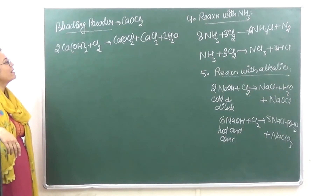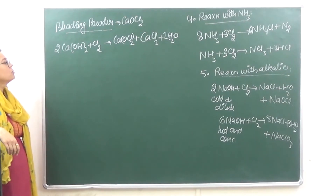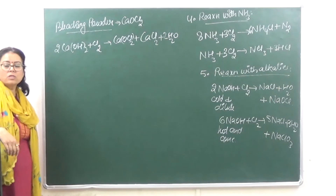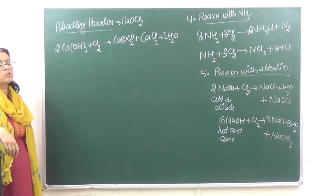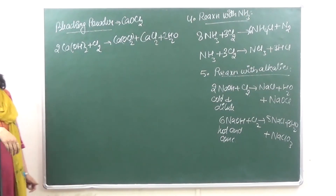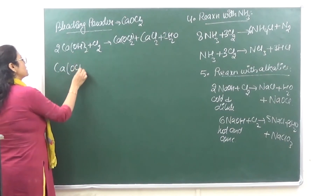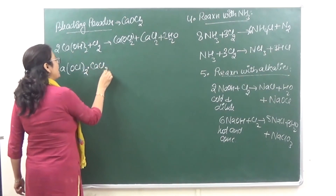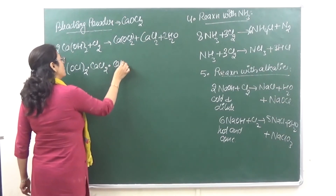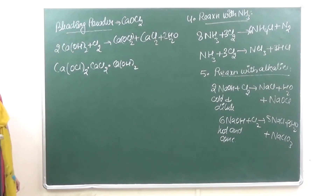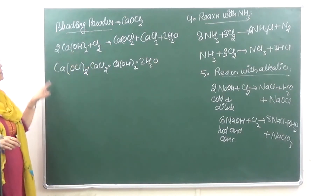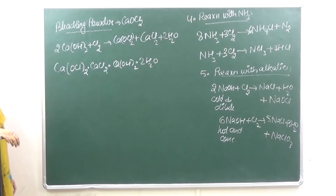Bleaching powder is prepared by the reaction of slaked lime (Ca(OH)2) with chlorine. This gives bleaching powder plus calcium chloride plus 2H2O. Bleaching powder is not just CaOCl2 — it has a composition which includes many salts mixed together. The composition includes the major salt CaOCl2, calcium chloride, a certain amount of calcium hydroxide, and water of crystallization.